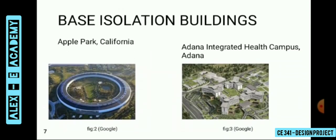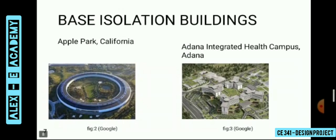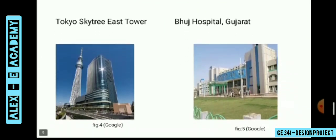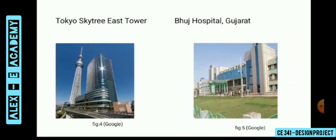Base isolation buildings — here are some of the places where base isolation has been applied: Apple Park, California; Adana Integrated Health Campus, Adana; Tokyo Skytree East Tower, Tokyo; and Buj Hospital, Gujarat. In 2001, an earthquake occurred in Gujarat and the building collapsed. So when it was reconstructed, base isolation was applied to that building. From these examples, we can see that base isolation is being effectively used nowadays.